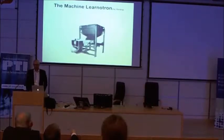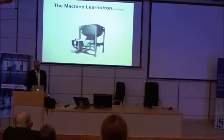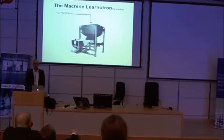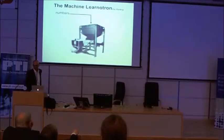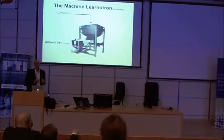One of my proudest inventions is this device here. It's called the Machine Learnertron. It's taken me a long time to devise, and as you can see, it's a very clever machine. There's a hopper at the top, and into the hopper we pour some numbers. Numbers are good — it could be any kind of data, but numbers are especially good. Out of the machine it produces answers. So it's very clever. And in a small way, it's a caricature of how I think some unthinking machine learning research progresses.